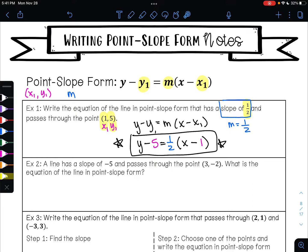All we did was replace y₁ with 5, m with 1/2, and x₁ with 1. So you just take the pieces of information that you're given and you use that to plug into the equation.